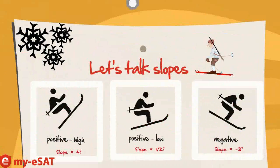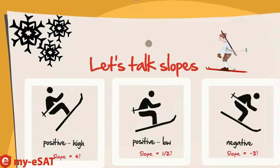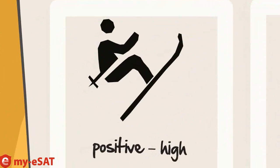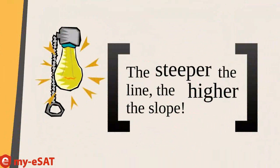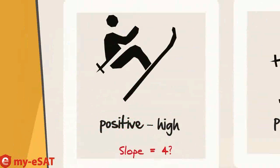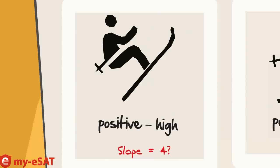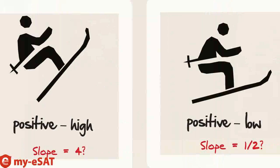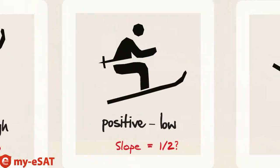You can determine a few things about the slope of a line without doing any calculations at all, just by looking at it. If it's going up, that tells you it's a positive number. The steeper it is, the higher the positive number is. So a line with a slope, like the one on the board, might be a 4.